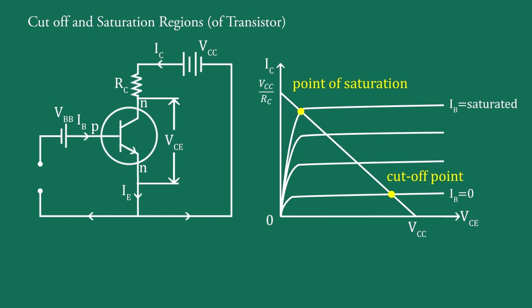All operating points between cut-off and saturation, that means from this point to this point, are the active region of the transistor. Now, this is the active region.